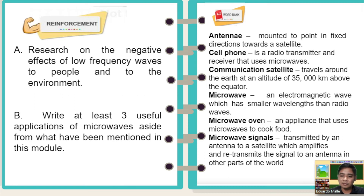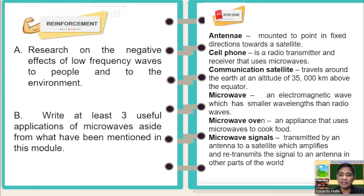Let us now proceed to the word bank or vocabulary. Antenna: mounted to point in fixed directions toward a satellite. Cell phone: a radio transmitter and receiver that uses microwaves. Communication satellite: travels around the earth at an altitude of 35,000 km above the equator. Microwave: an electromagnetic wave which has smaller wavelengths than radio waves. Microwave oven: an appliance that uses microwaves to cook food. Microwave signals: transmitted by an antenna to a satellite which amplifies and retransmits the signal to an antenna in other parts of the world.